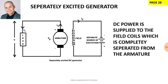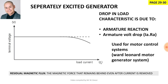Let's look at the different types of generators. Firstly, we have the separately excited generator. The DC supply to the field coils is completely separated from the armature. To control the amount of exciting current through the field winding, we include a variable resistor in the circuit. The load characteristic has load current on the horizontal axis and terminal voltage on the vertical axis. For a separately excited generator, the load characteristic is the same as the shunt generator — it remains relatively constant but does tend to drop off. This is known as a drooping load characteristic, due to armature reaction and RA.